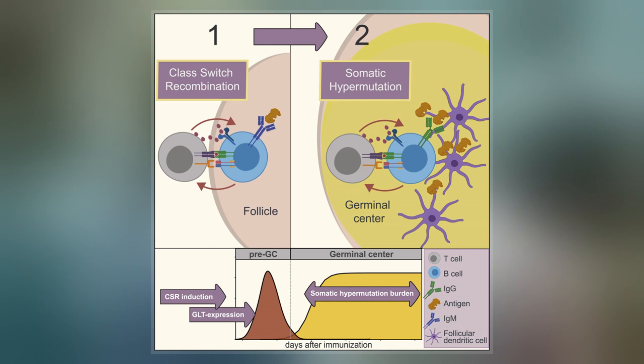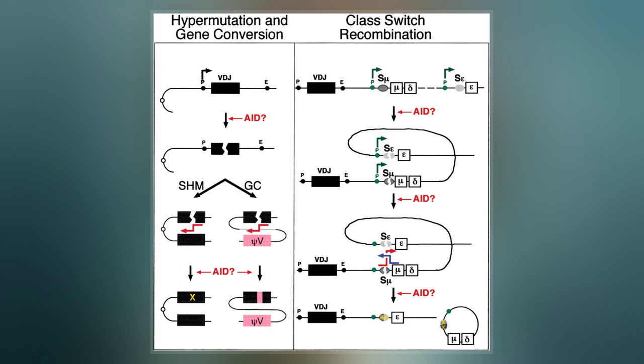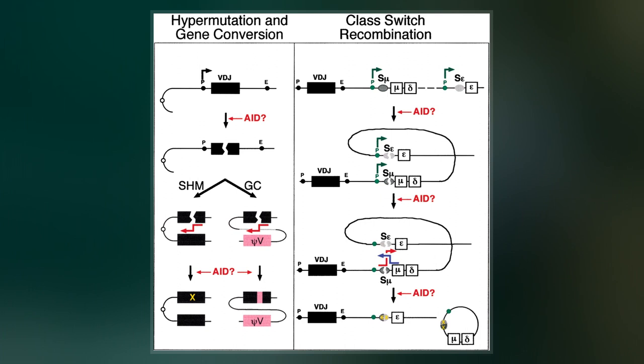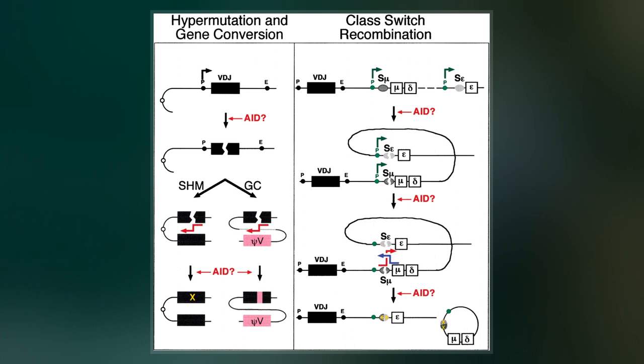Mistargeted somatic hypermutation is a likely mechanism in the development of B cell lymphomas and many other cancers. When a B cell recognizes an antigen, it is stimulated to divide. During proliferation, the B cell receptor locus undergoes an extremely high rate of somatic mutation that is at least 10⁵–10⁶-fold greater than the normal rate of mutation across the genome.